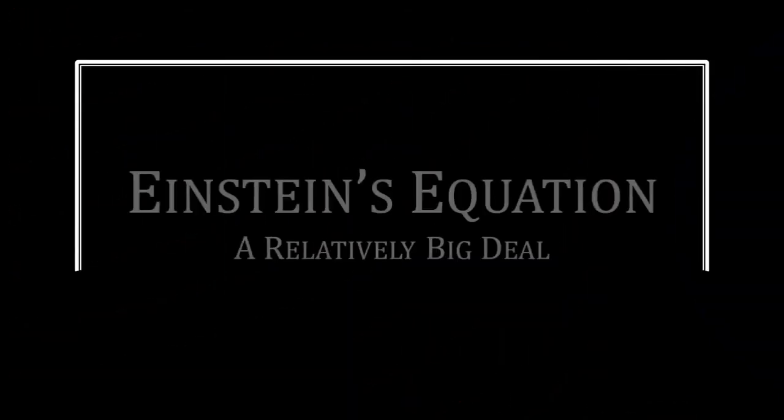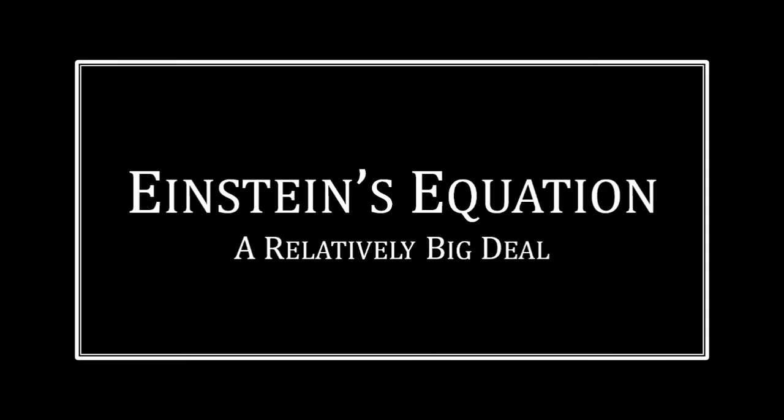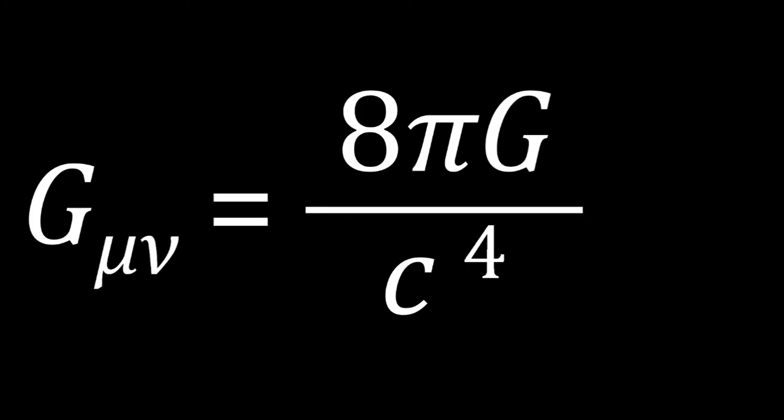Einstein used Riemann's theory to develop an equation to show how gravity formed. Here it is. G mu nu equals 8 pi G over c to the power of 4 times T mu nu.